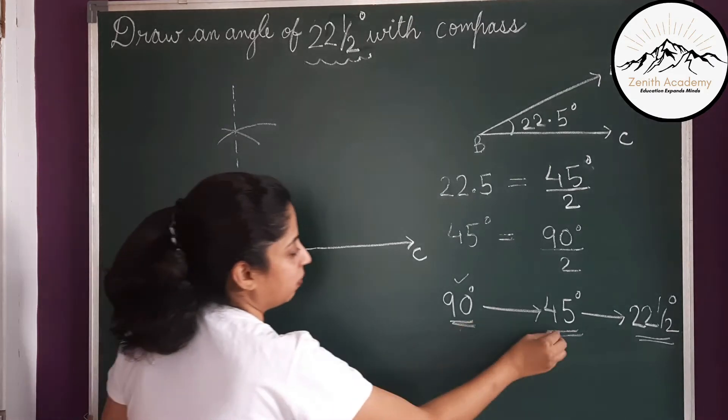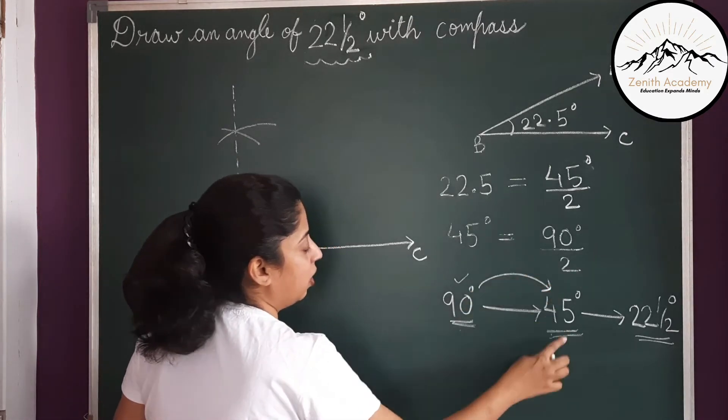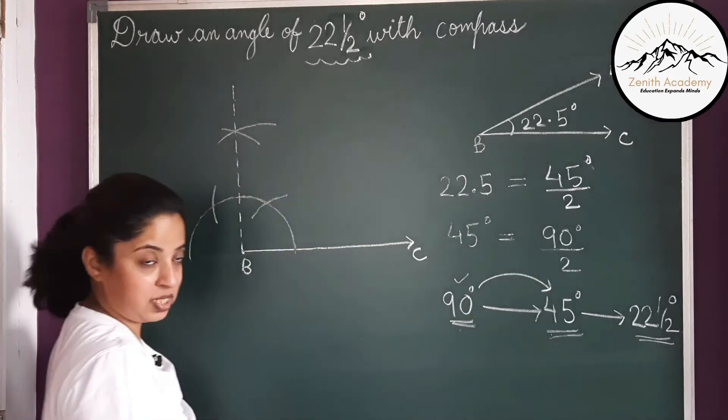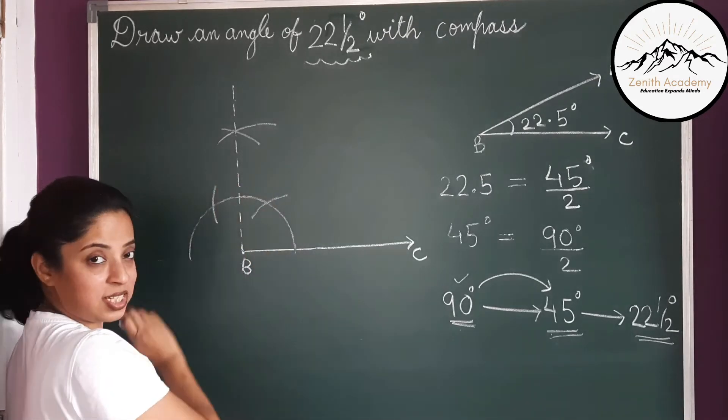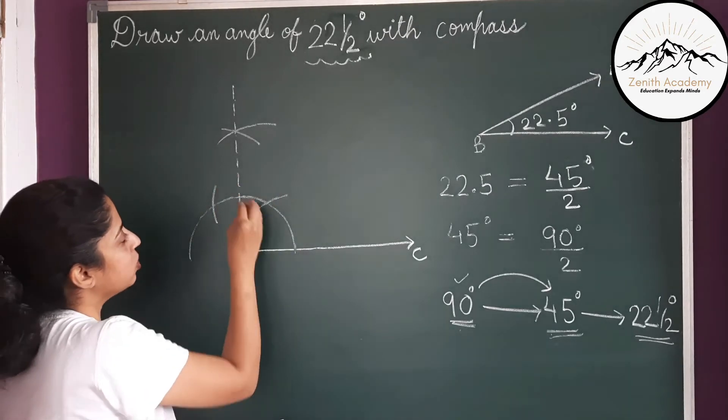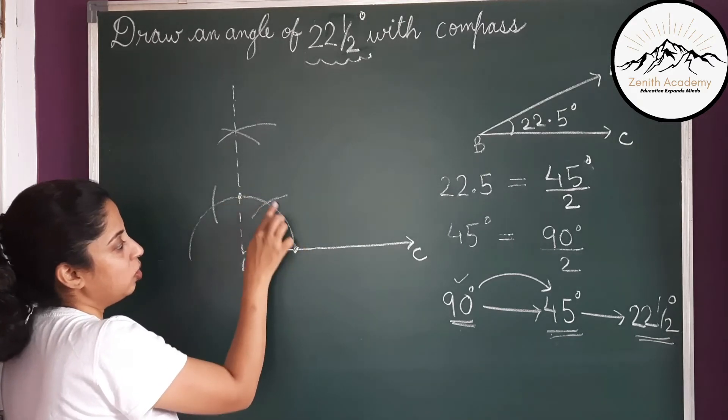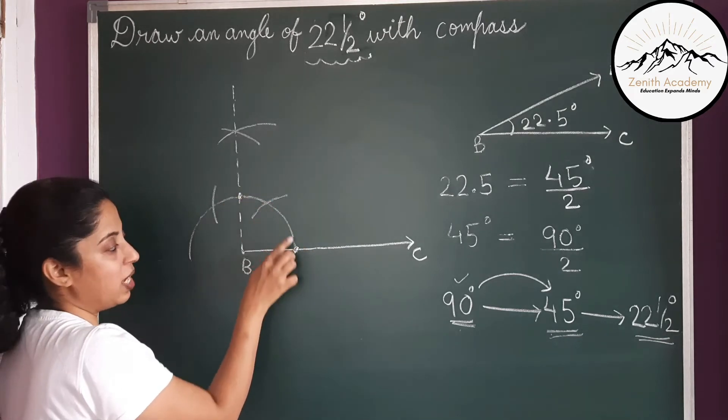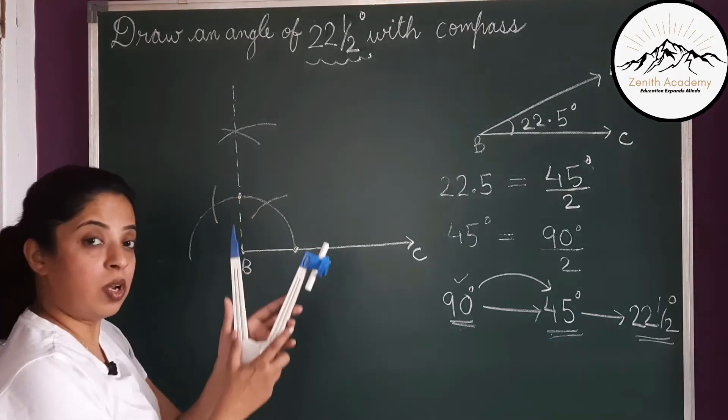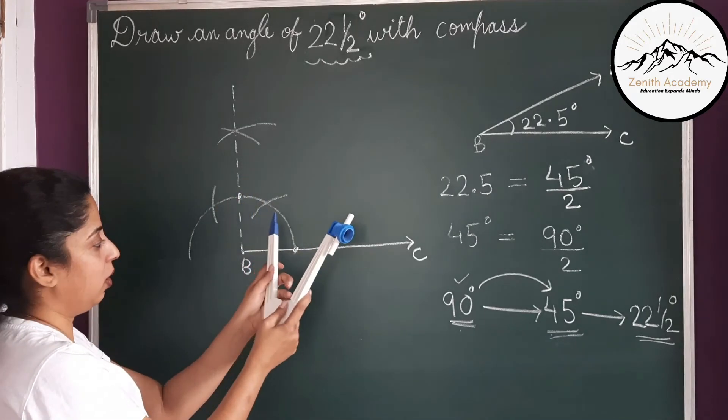But we don't want 90. We'll move ahead. Now we want 45 out of this 90. So we will have to bisect this angle. So where are the end points of this angle? This point and this point. This is the whole angle 90. So we will have to bisect it from these two points. Now take your compass, stretch it.